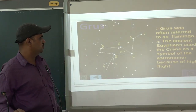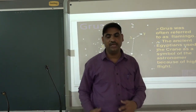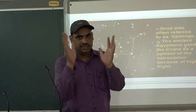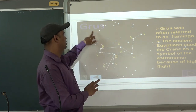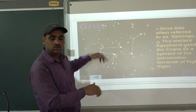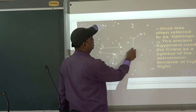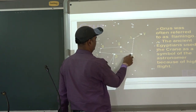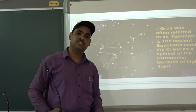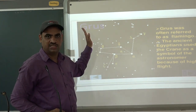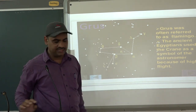The next constellation is Phoenix, which looks like a flamingo — a bird. This pattern which looks like a flamingo is called Phoenix. You can see the shape has been created; these are the legs. This is one constellation that you may see in the sky.